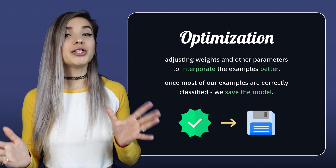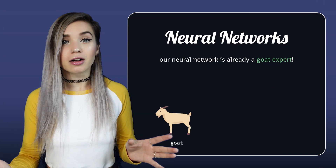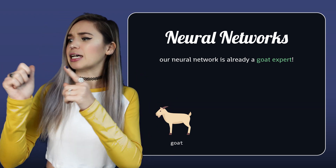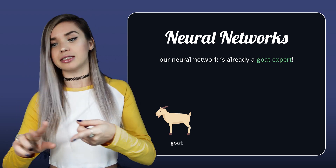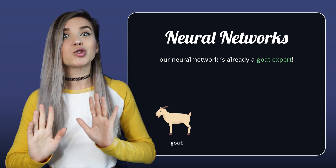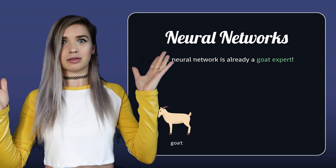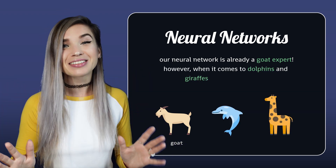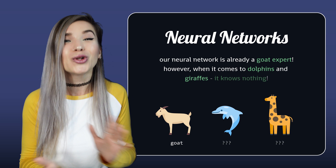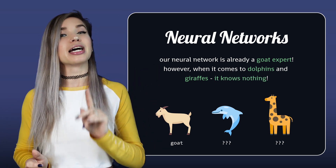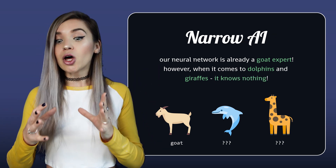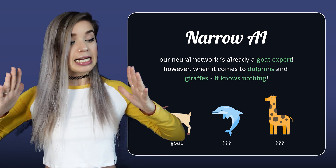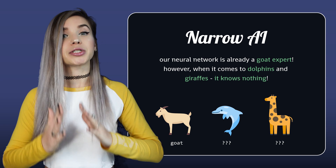Because our neural network has already learned about thousands of goat images from different colors, different angles, and different ages, when it comes to goats, it's an expert. But when it comes to dolphins and giraffes, it is absolutely clueless. That's what we call narrow AI — it can only do one particular task, and it has a very narrow area of expertise.